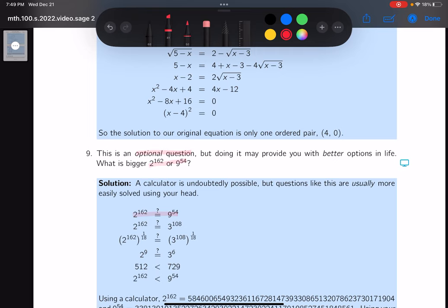First thing I did was I wrote 2 to the 162, pretty straightforward, but then I wrote the 9 as 3 squared. So what's going to be 3 squared to the 54? And what is it going to give you? Well, it's going to be 3 and 2 times 54 is 108. So I got that part over here.